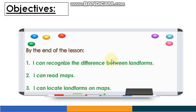The next point is: you can read maps. As we have learned before, maps are very important. Can you tell me why? Because you need a map to find any location you want. Now let's move to point number three — I can locate landforms on a map. Each map has a key and symbols, and you can use them to find the landforms.